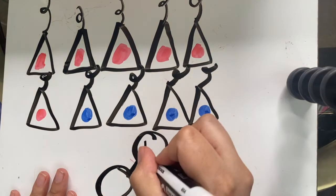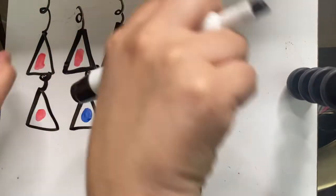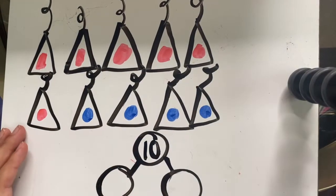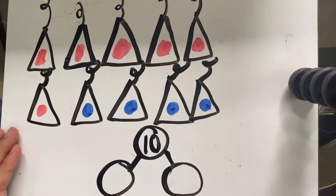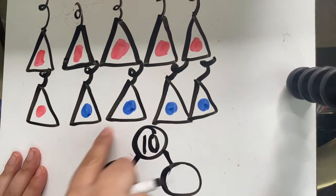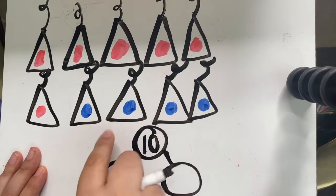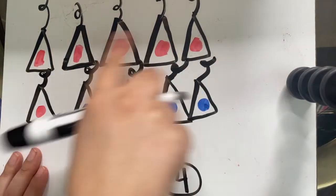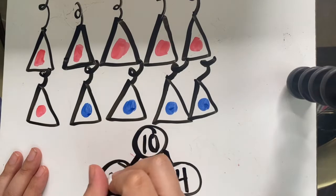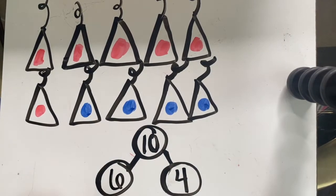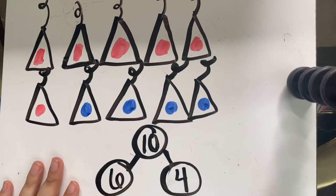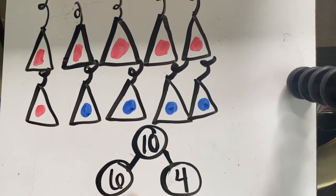So 10 would go in the hole because that's the number we have all together, and the number partners of 10 appear to be what number of blue hats? Four, and what number of red hats? Six, so let's say six and four make 10. Six and four make 10, very good, and those are the number partners of 10.